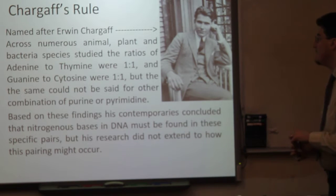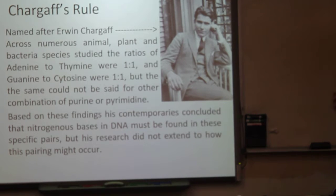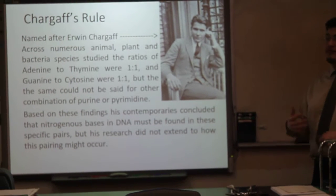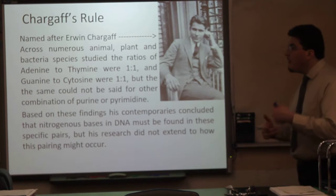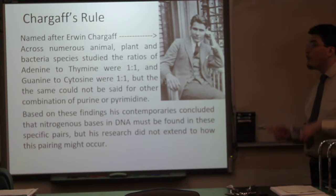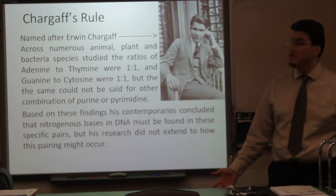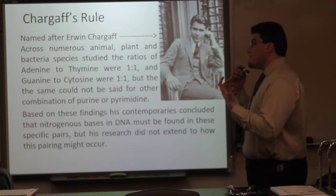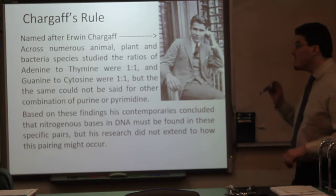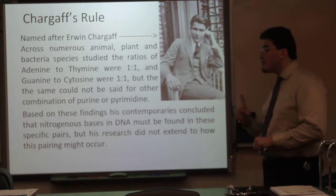Now let's talk about Chargaff's rule, named after Erwin Chargaff. He did an experiment across numerous plant, animal, and bacterial species. He studied the ratios of adenine to thymine and found they were roughly 1 to 1. He also measured the guanine-to-cytosine ratio was 1 to 1. The same could not be said for, say, thymine to guanine — it does not have to be 1 to 1; it could be 1 to 50. Based on these findings, his contemporaries concluded that the nitrogenous bases in DNA must be found in these specific pairs, though his research did not extend to how this pairing might occur.